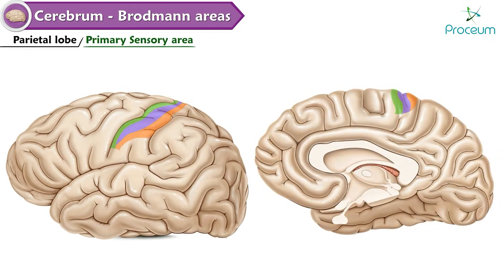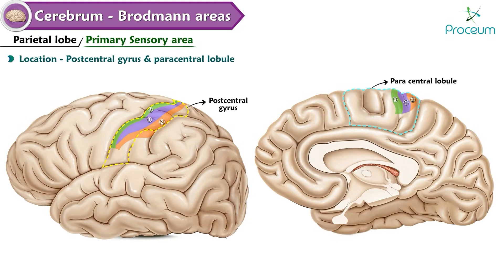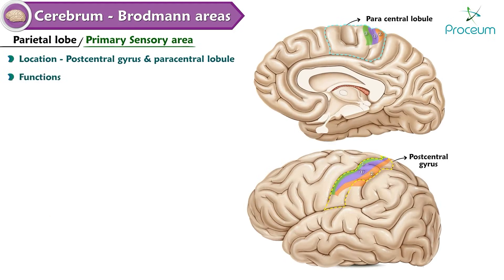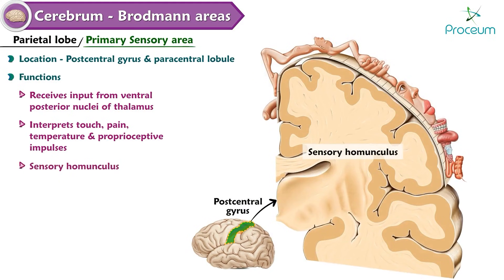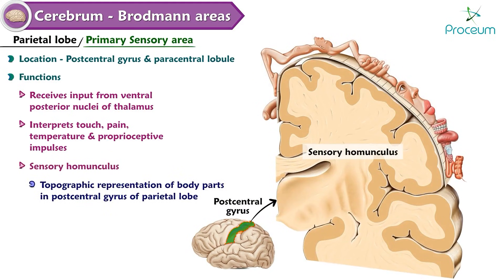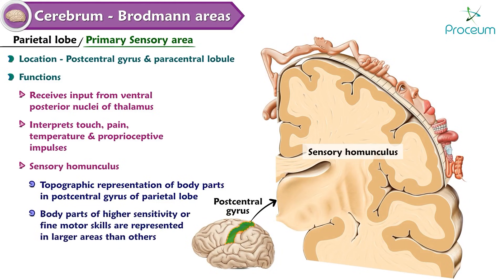Primary sensory area — Areas 3, 1, and 2. Location: postcentral gyrus and paracentral lobule. Functions: receives input from the ventral posterior nuclei of the thalamus and interprets touch, pain, temperature, and proprioceptive impulses. Contains the sensory homunculus, a topographic representation of body parts in the postcentral gyrus of the parietal lobe; body parts of higher sensitivity or fine motor skills are represented in larger areas, arranged medially to laterally as follows.